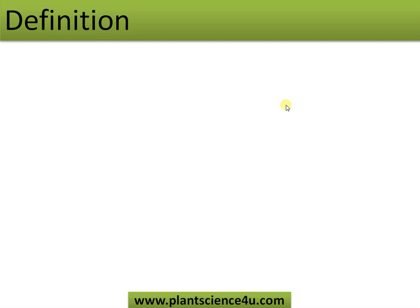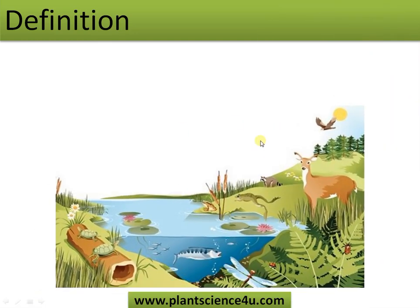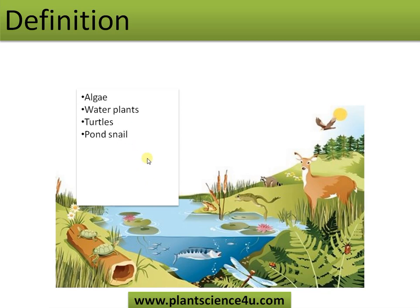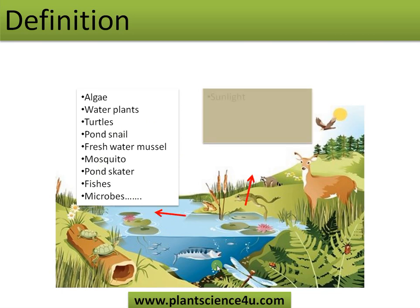Moving to the definition, let's take an example to make out the definition. This is a pond ecosystem. The living beings in the system include algae, water plants, turtles, pond snail, freshwater mussel, etc. There are also many physical factors like sunlight, temperature, water, and dissolved oxygen.